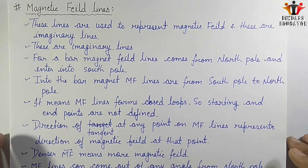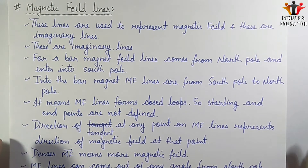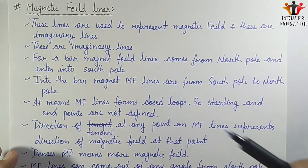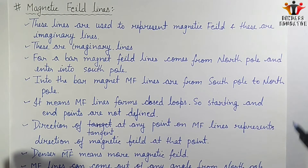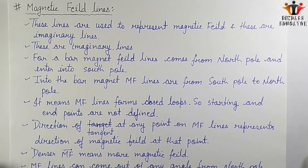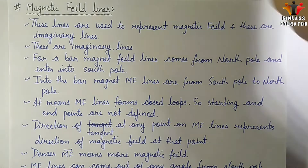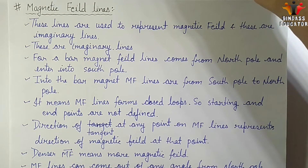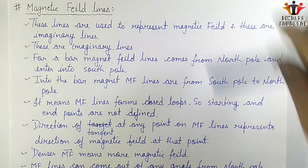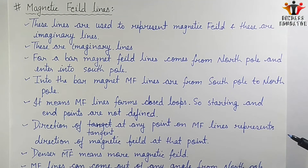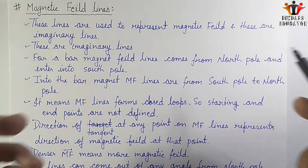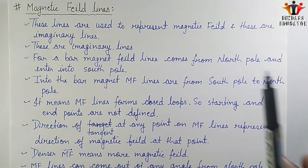The next topic is magnetic field lines. Magnetic field lines are an imaginary concept — we can never see them, we can only feel their effects. Just like we cannot see gravitational force but can feel it when an object falls, similarly we can feel magnetic field lines when, for example, two magnets repel or attract each other. We have named this influence 'magnetic field lines.'